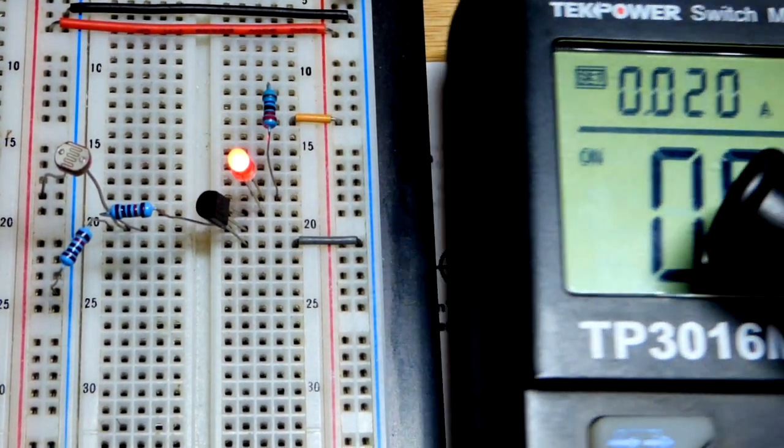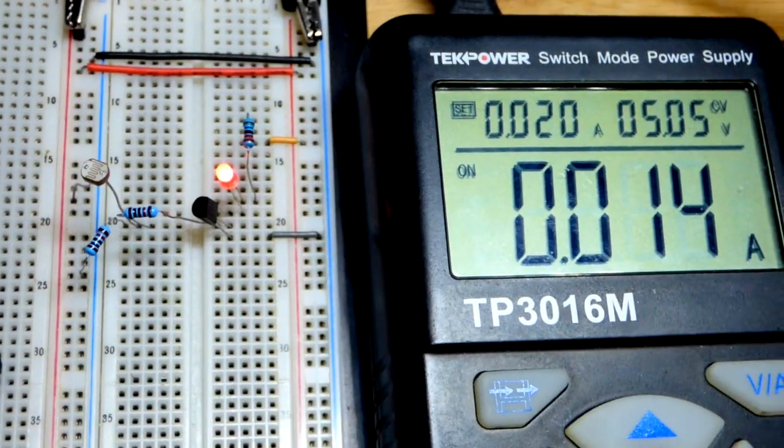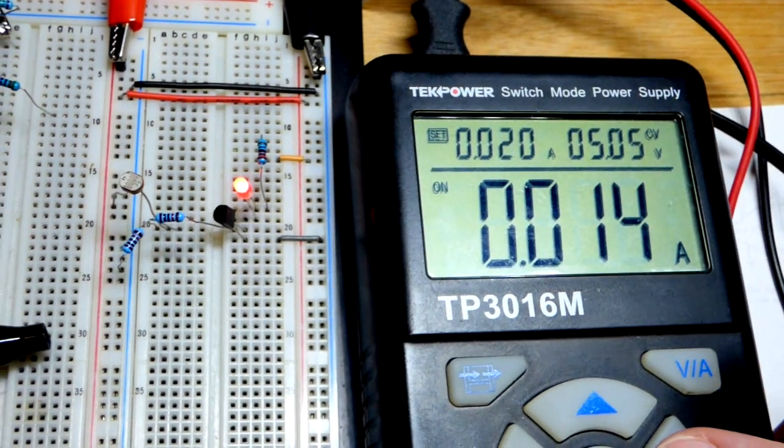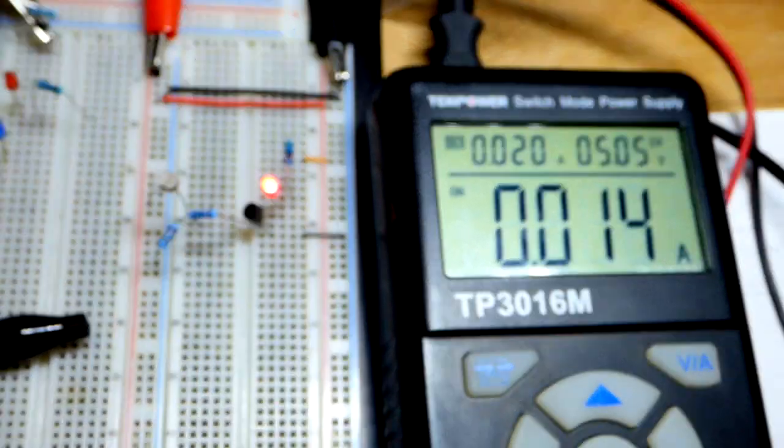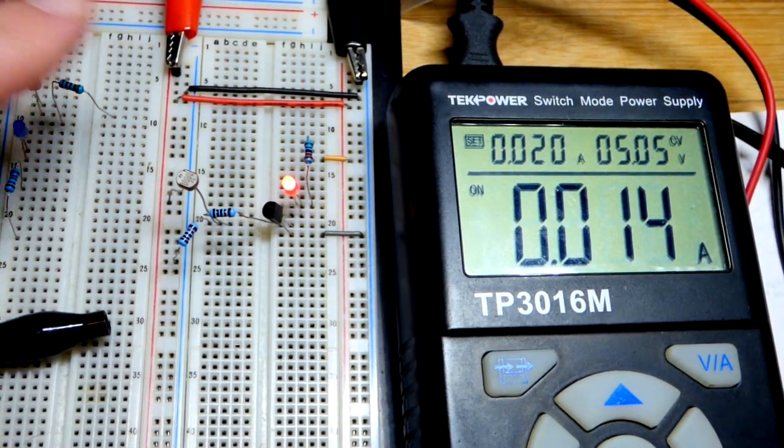And we're actually getting 5 volts across it. So, we will zoom back and look at the power supply. This is an easy way to tell when it's conducting fully. Right now, it says 14 milliamps. It might go to 13. It's probably right on the edge, about 14. And I got the lamp at the brightest setting.